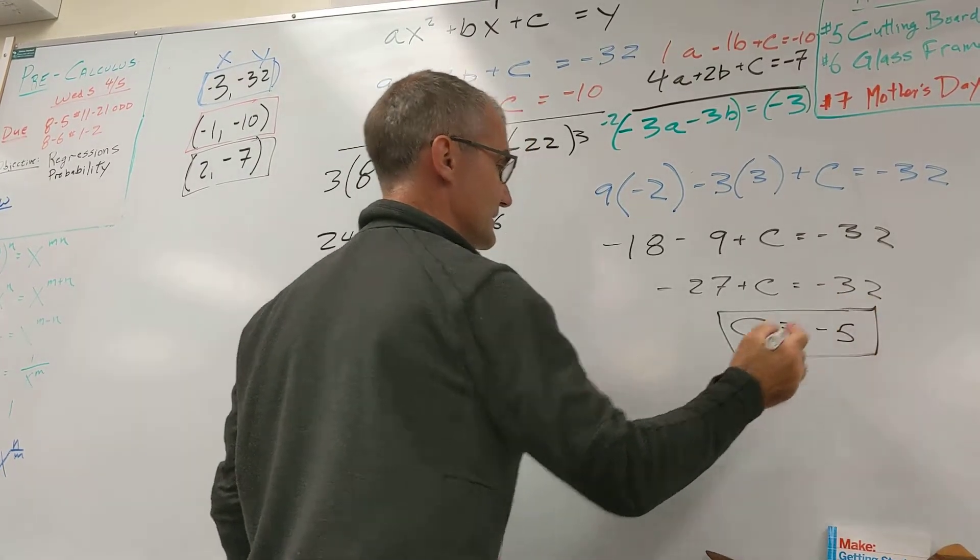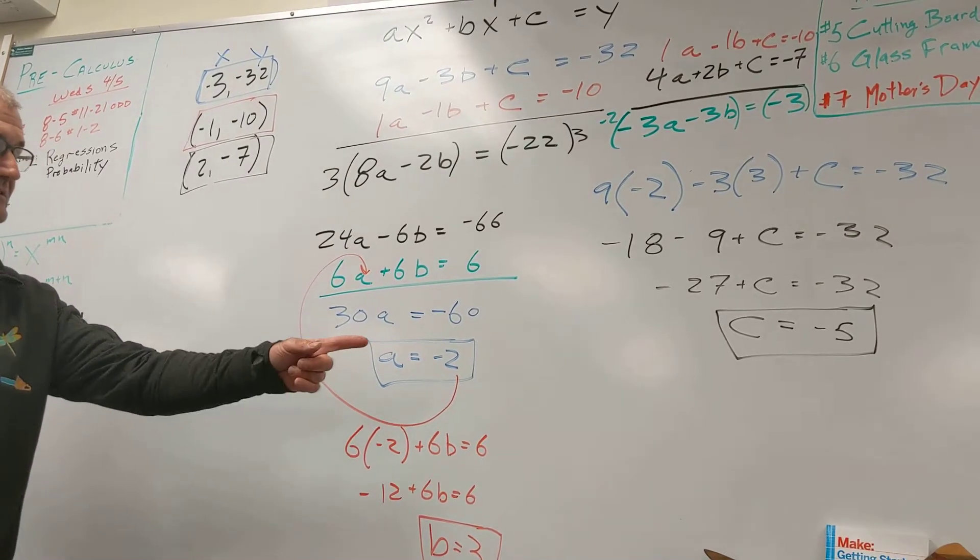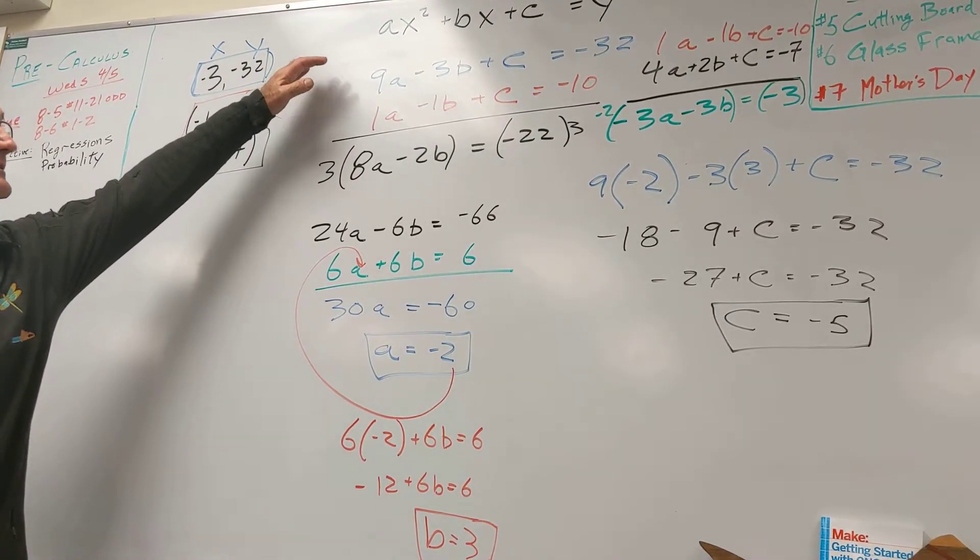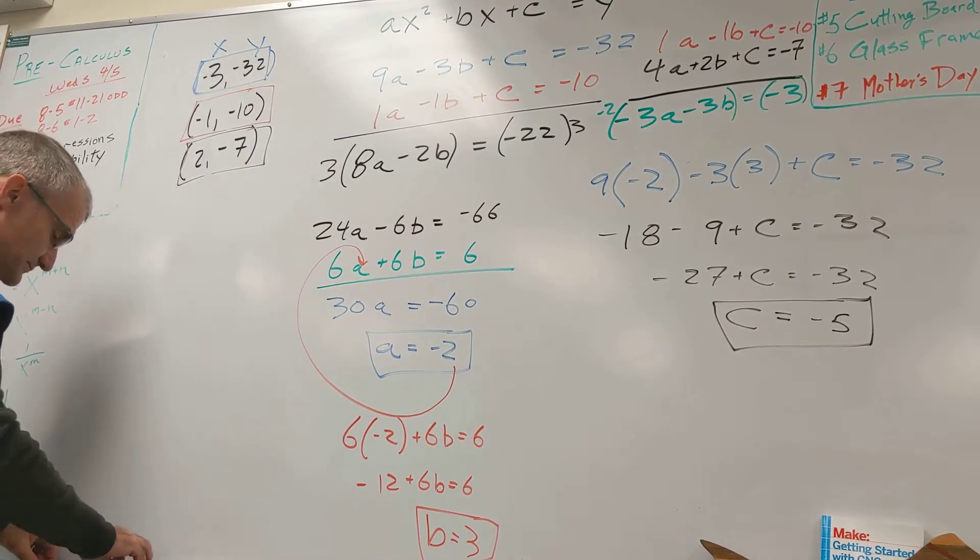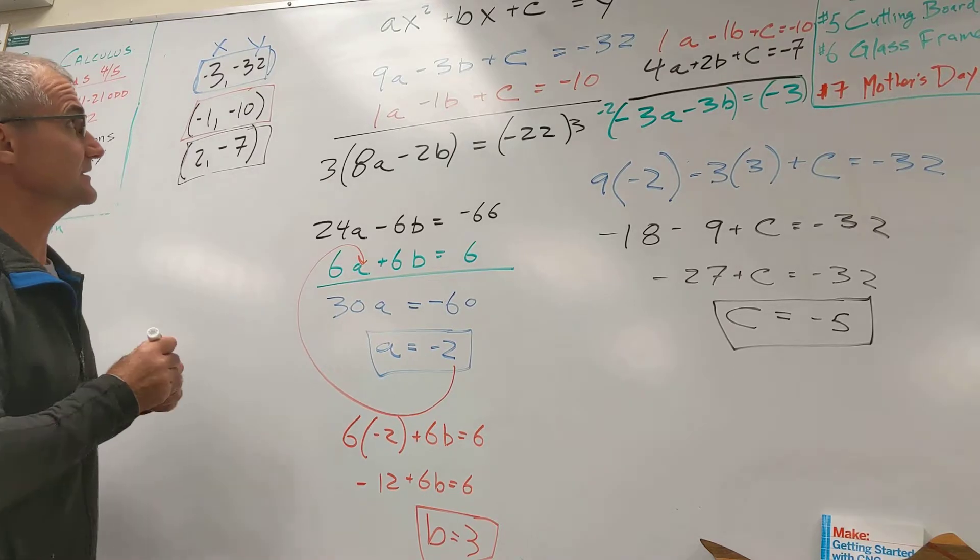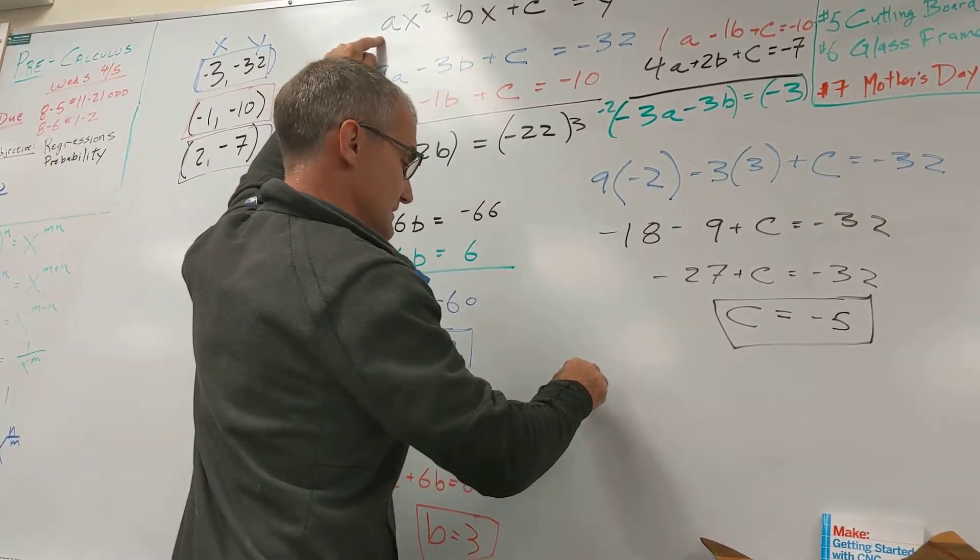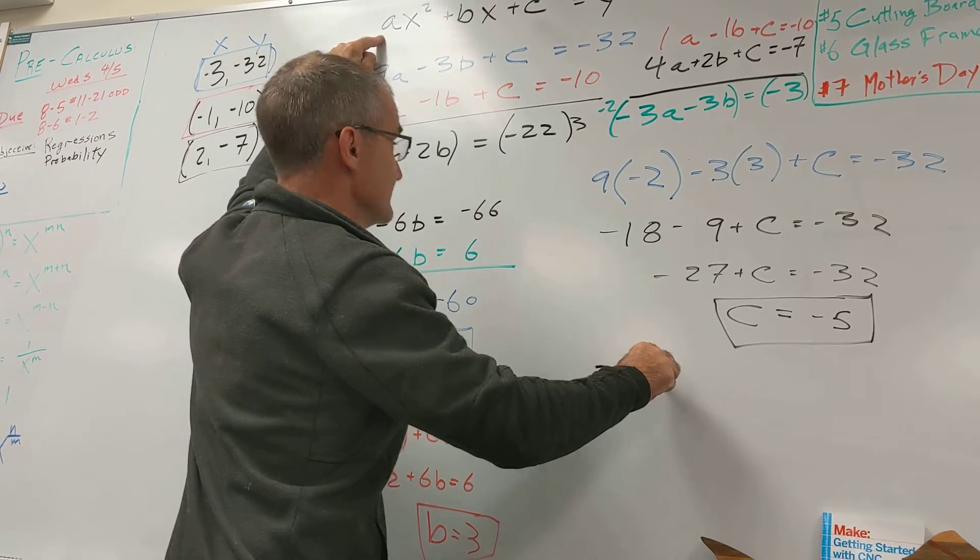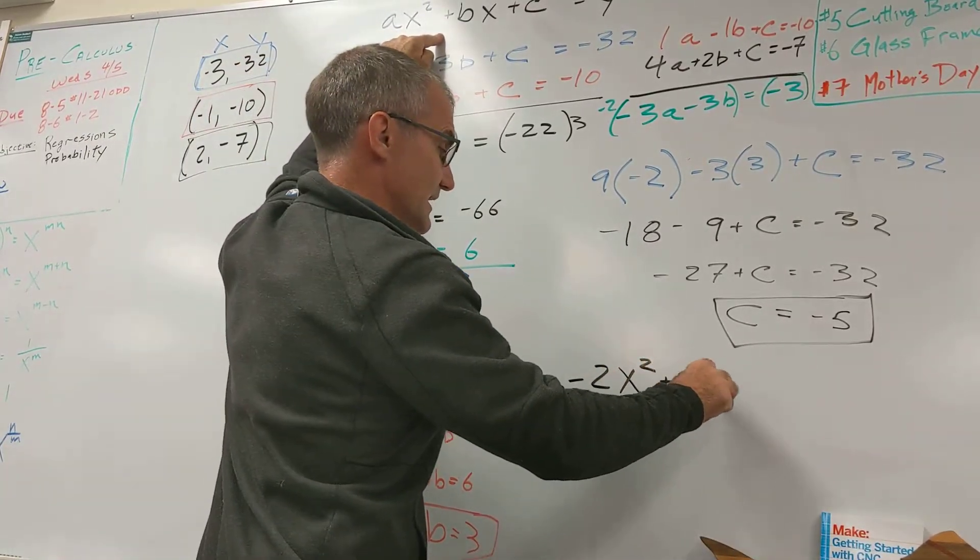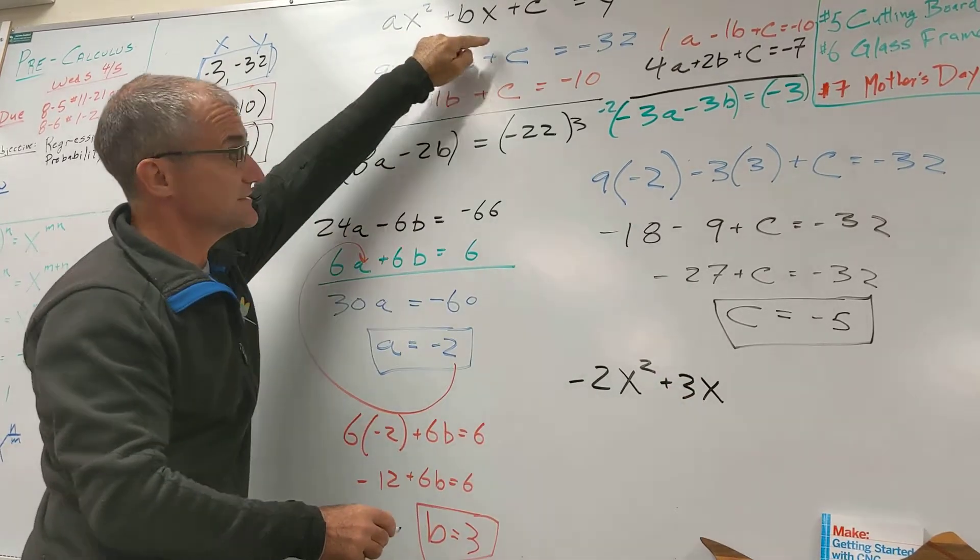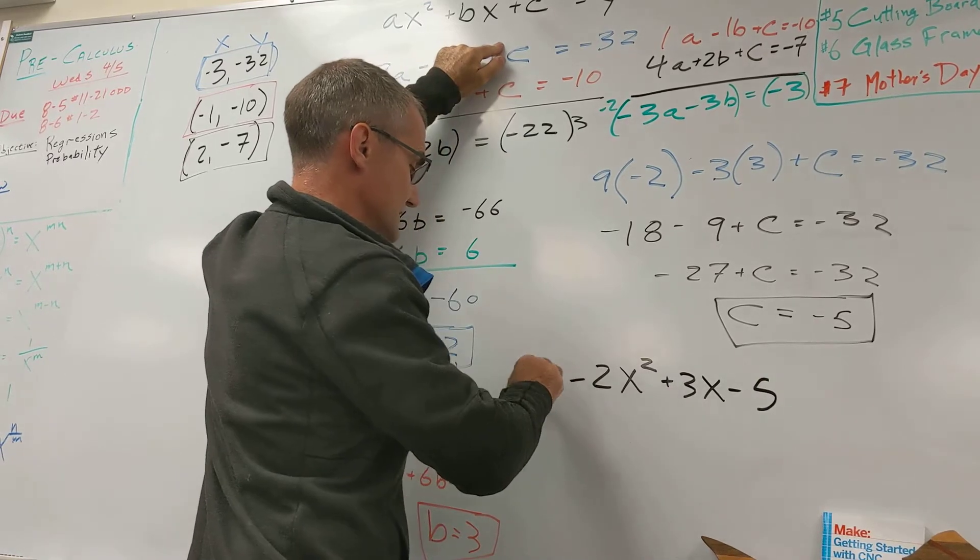So from my general equation, I have solved a, b, and c. From my general equation, ax squared plus bx plus c, I have a specific equation. That specific equation is ax squared. A is negative 2, negative 2x squared, plus bx, b is 3, 3x, plus c, negative 5, and then y is equal to that.